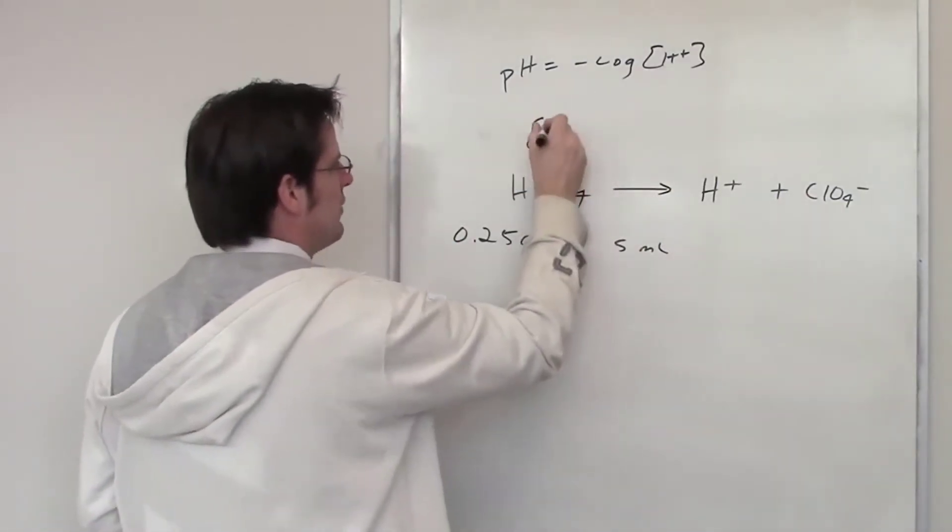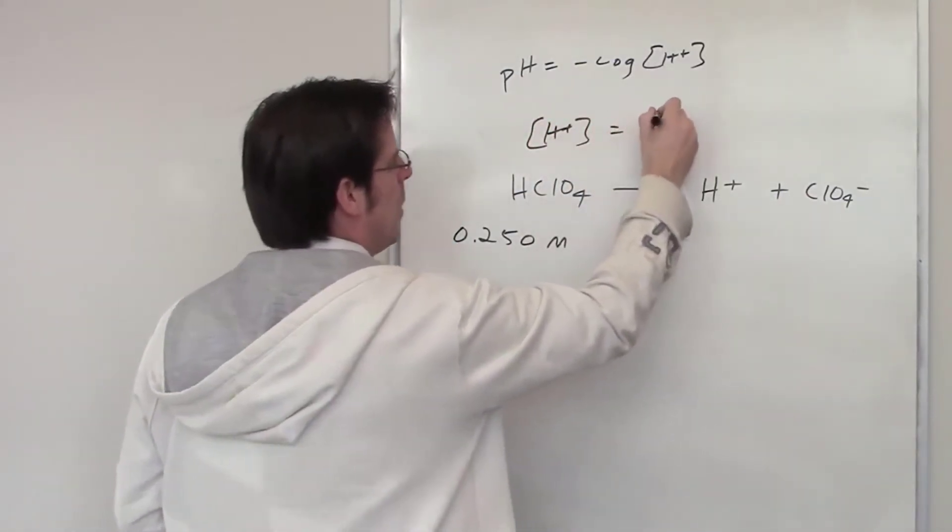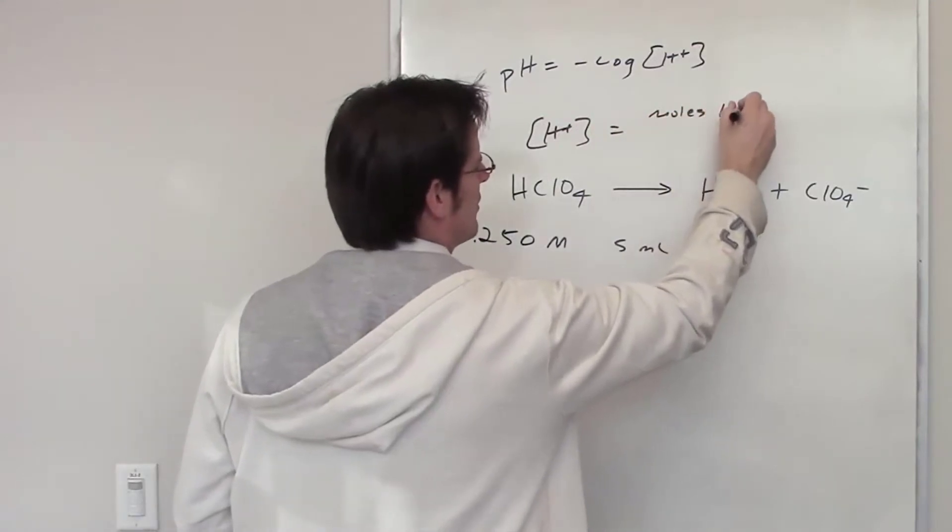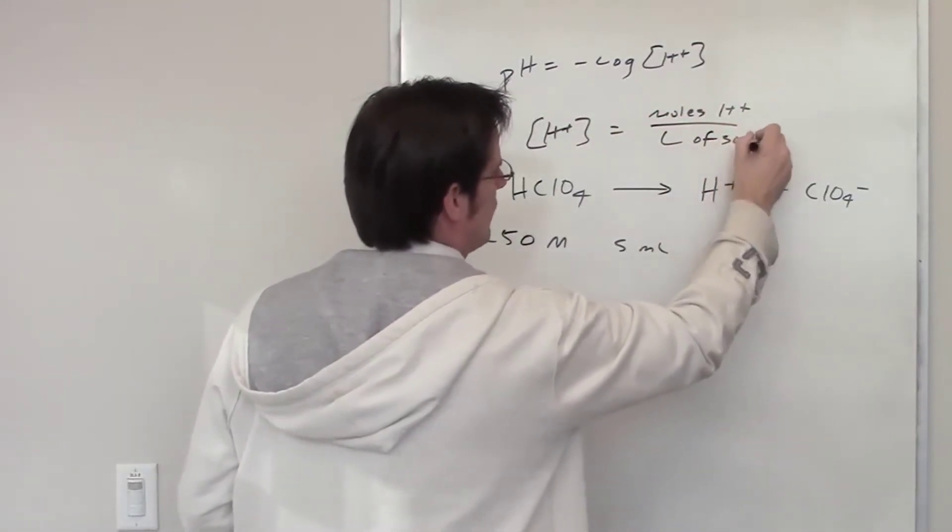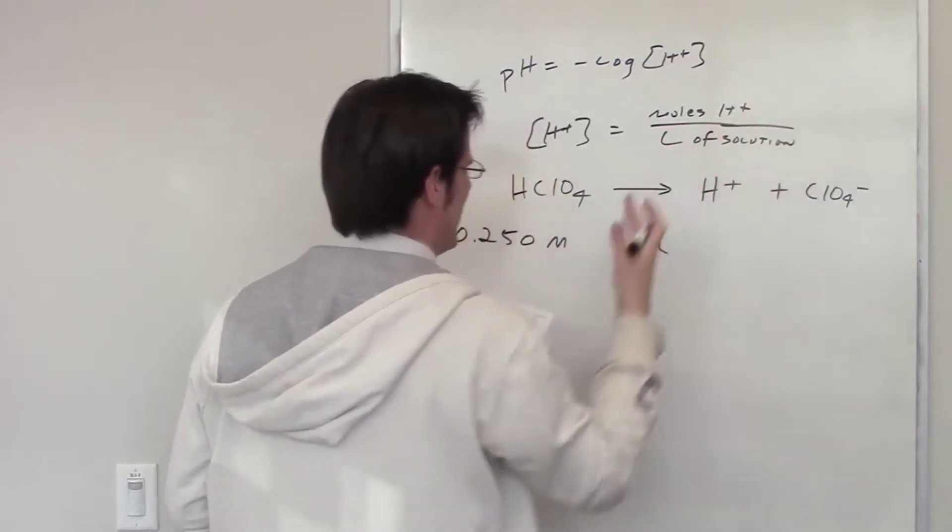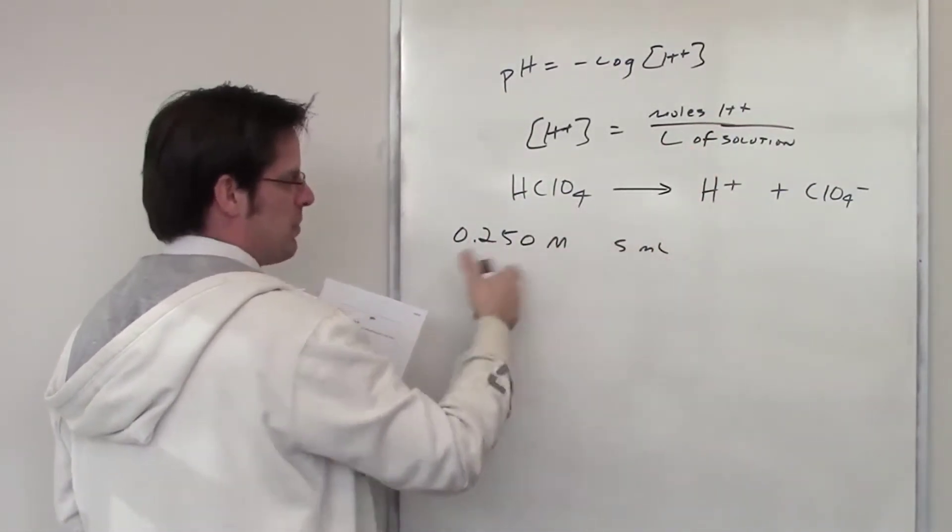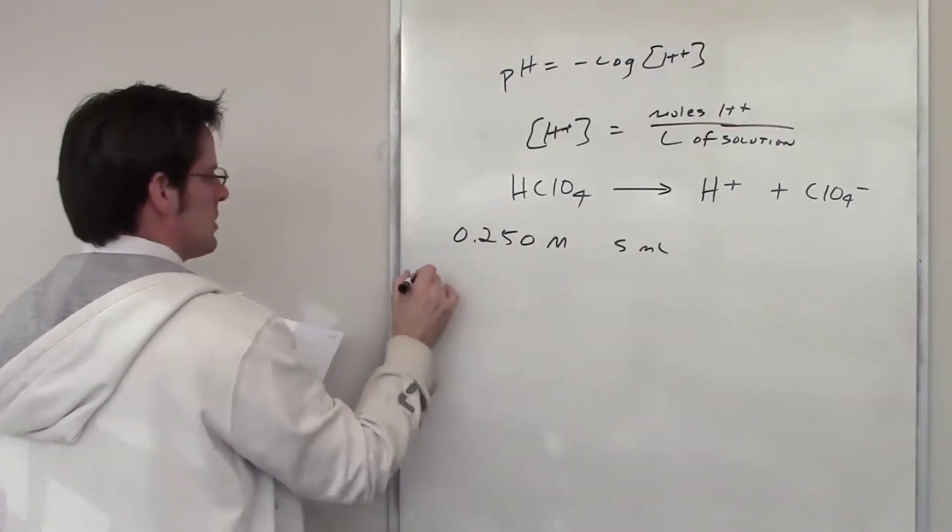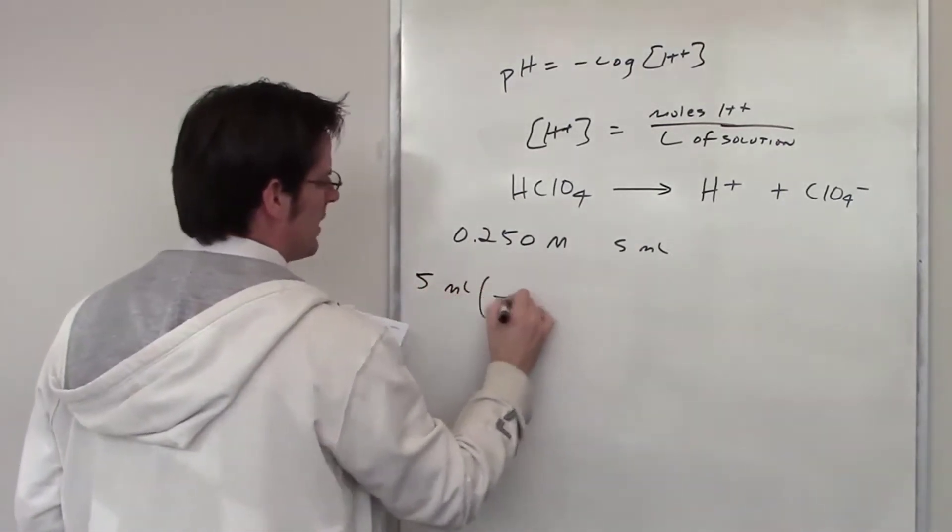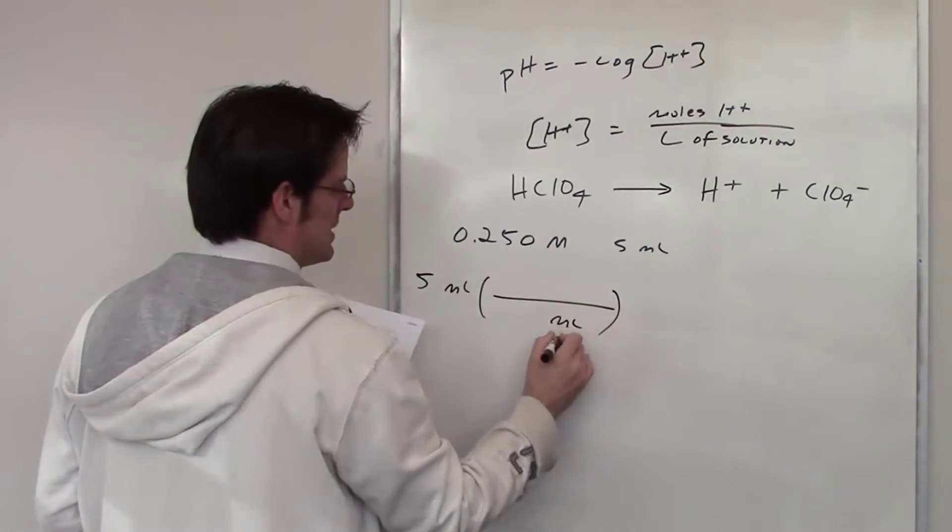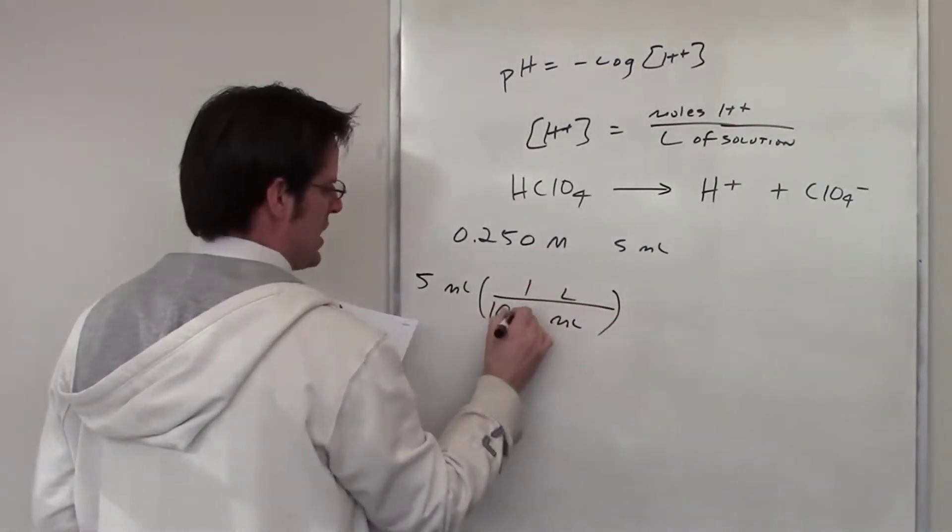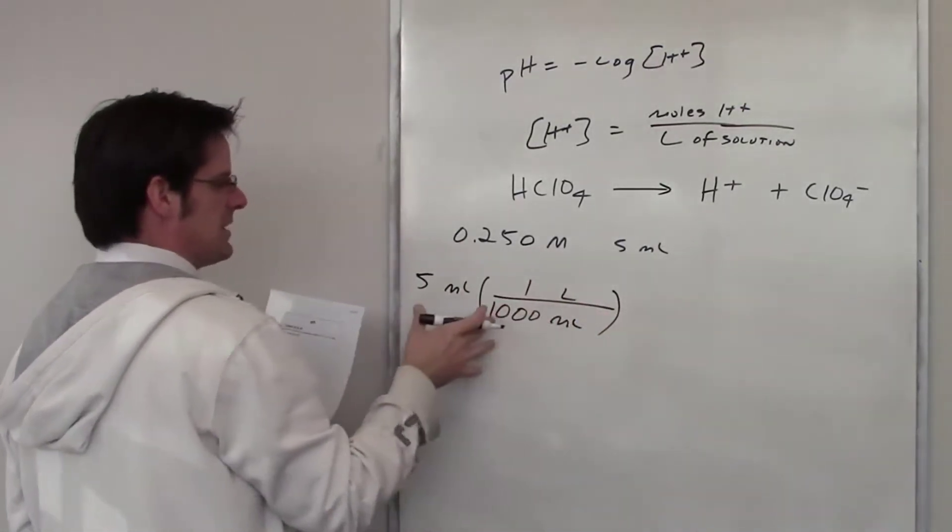So, keeping in mind, the concentration of H+ is going to be equal to moles of H+ divided by liters of solution. I need to figure out how many moles of H+ am I going to get if I take 5 milliliters of a .25 molar solution. So I'm going to go ahead and write milliliters here. I want to convert that to liters. I'll write milliliters in the denominator, liters in the numerator. One liter has 1,000 milliliters. That will get me to liters.